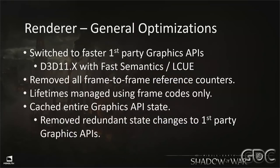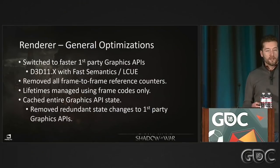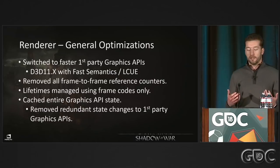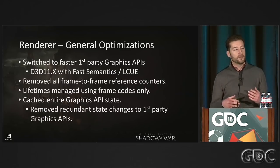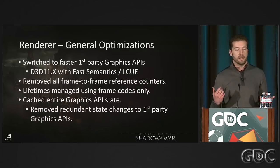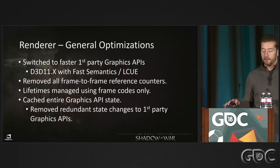We also switched to much faster first-party graphics APIs, and we removed frame-to-frame reference counters from the renderer. Atomic reference counters seem fast — they're just atomic increment and decrement, a single CPU instruction — but if you're doing it 10,000 times a frame in a renderer, it really adds up. We eliminated all of that and now use frame codes to track all object lifetime.